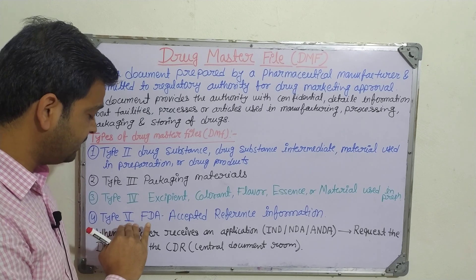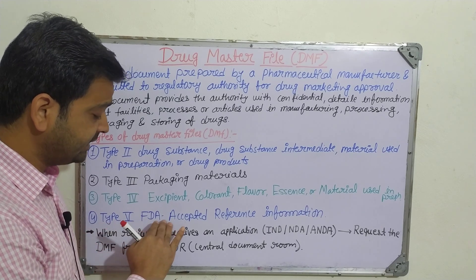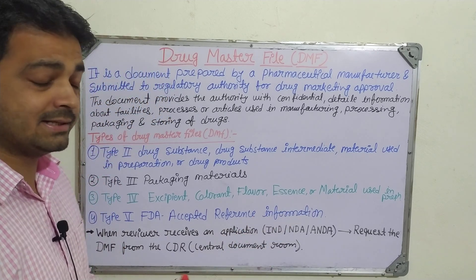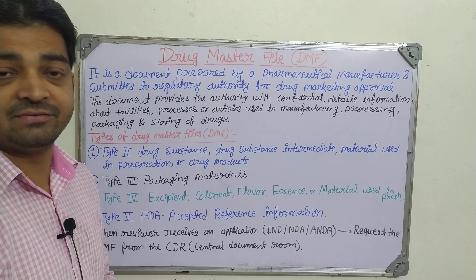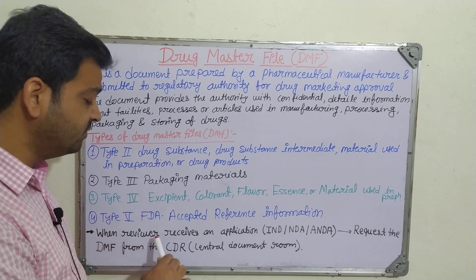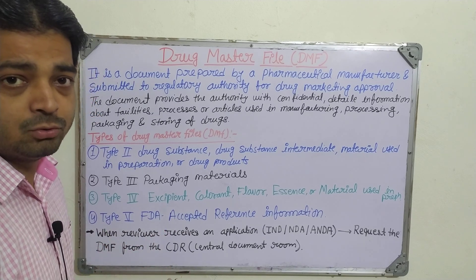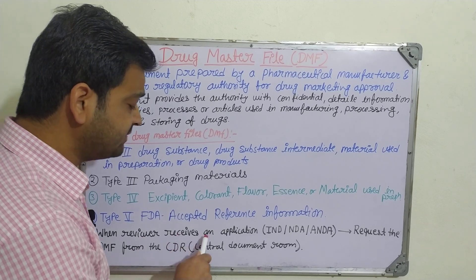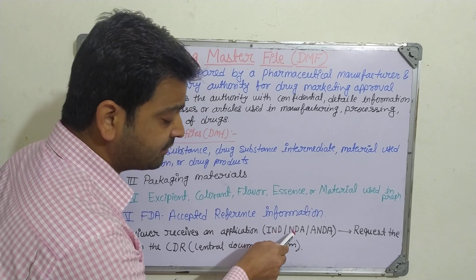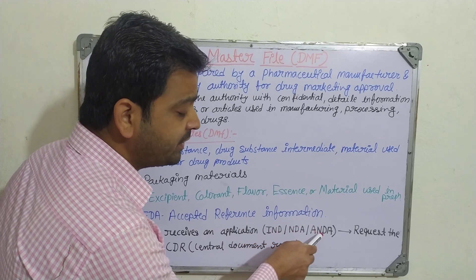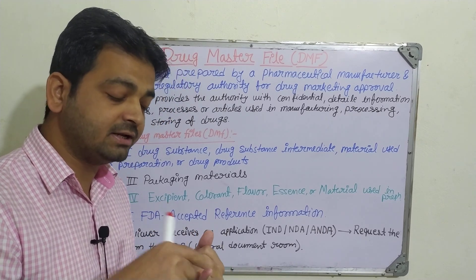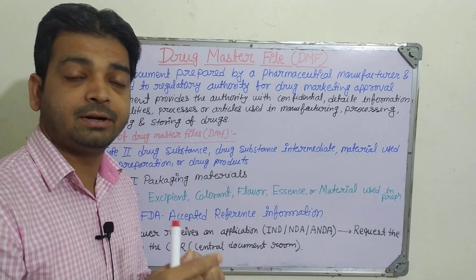The fourth type is the Type 5 file, which contains FDA-accepted reference information — whatever drug has been accepted by the FDA is provided as a reference in this file. When a reviewer at the FDA receives an application — whether for an Investigational New Drug, a New Drug Application, or an Abbreviated New Drug Application — they review accordingly. Investigational means before or during preclinical trials; NDA is submitted after Phase 3 completion.